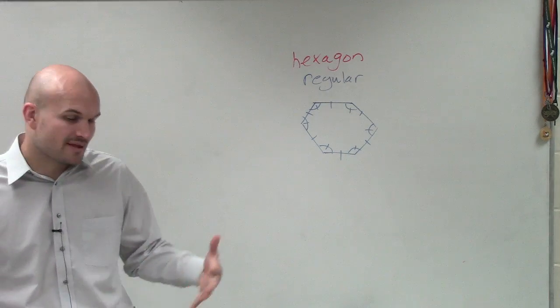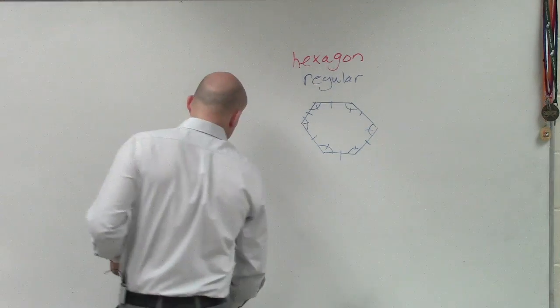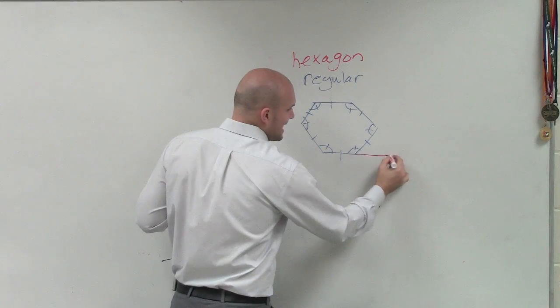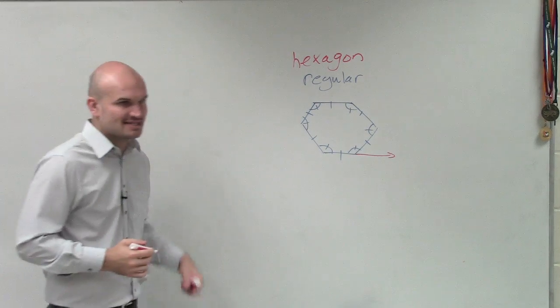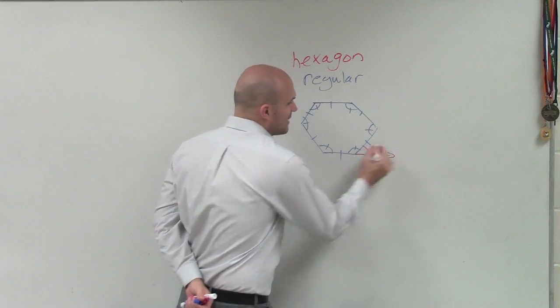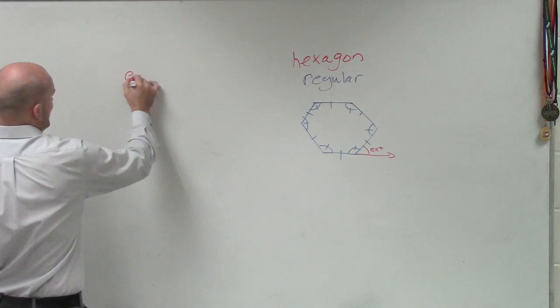Now if I'm saying, find the measure of one of these exterior angles, remember when we determine exterior angles, what I told you guys to do is take a side that creates an angle and extend. Extend that side. When you do that, you create an exterior angle.